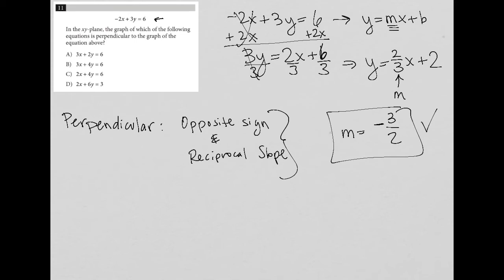This is what I want. So now I go to my answer choices and I say, well, which one of these answer choices, once I convert it into y equals mx plus b form, will give me an m equal to negative 3 halves?